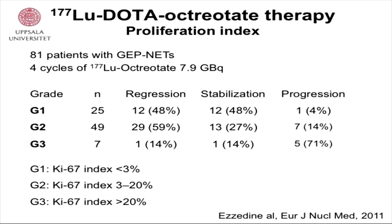This is a study about lutetium in patients with varying proliferative index. Patients with G3 tumors — Ki-67 more than 20% — had a much higher risk for progression on treatment. However, a proliferative rate of more than 20% is not an absolute contraindication; we have seen patients with higher proliferative rates responding to treatment and for longer periods. You have to consider whether the patient should instead have chemotherapy, or start with chemotherapy and if they achieve remission, give lutetium instead.